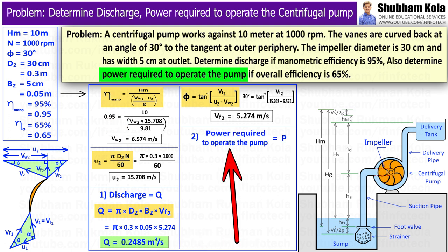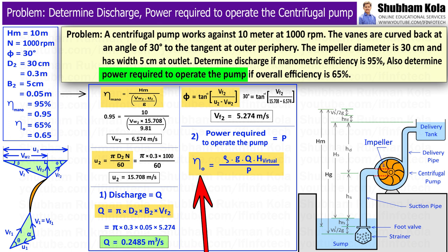We want to calculate power required to drive the centrifugal pump. To calculate power required to drive the pump, i.e. shaft power, I will use the overall efficiency equation which is equal to power output, rho gQ into virtual head Hv2, whole term divided by shaft power, where virtual head represents the total head through which liquid can be lifted when all friction losses in pipes, impeller and casing are neglected.